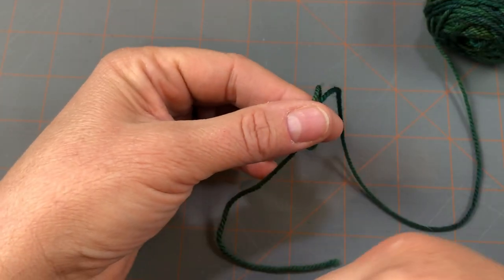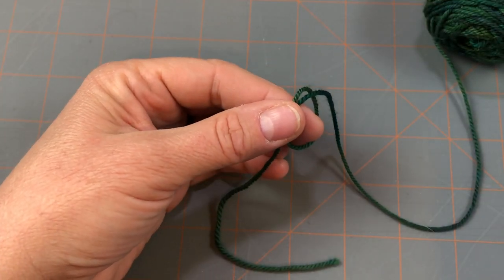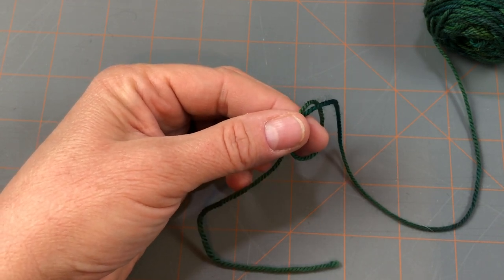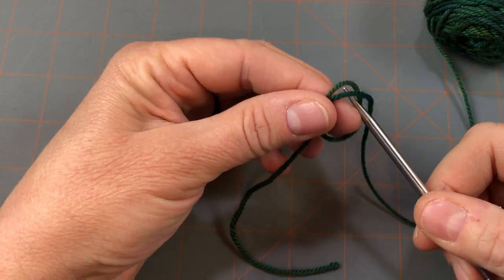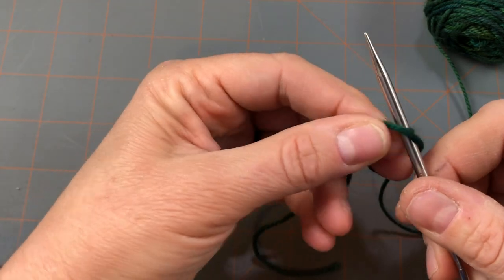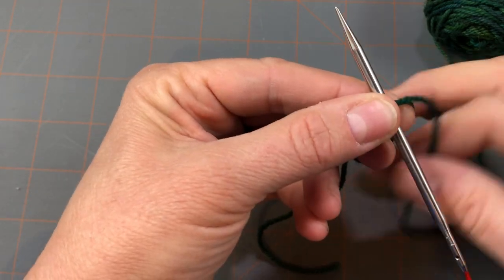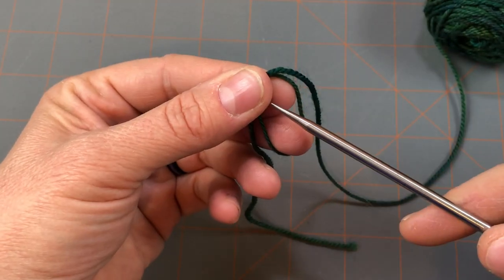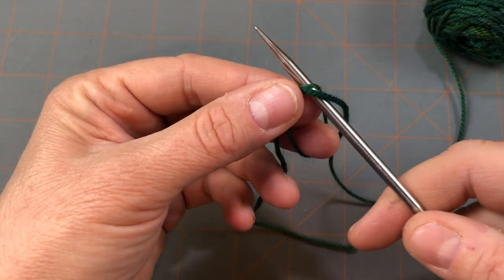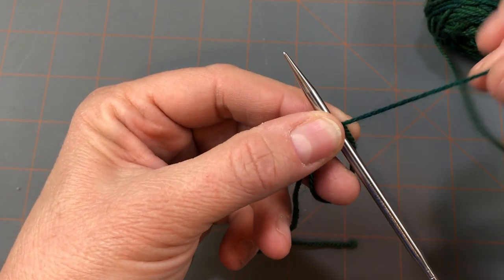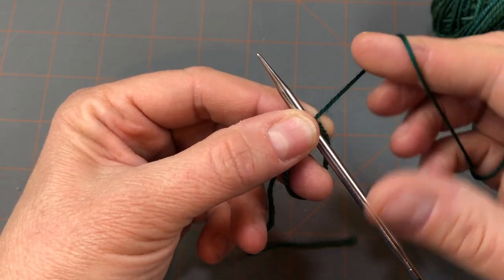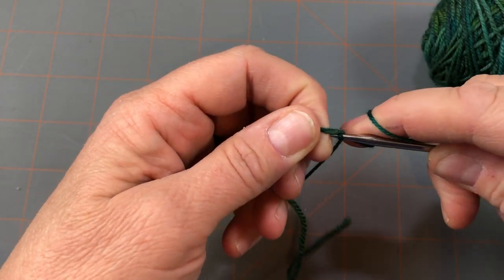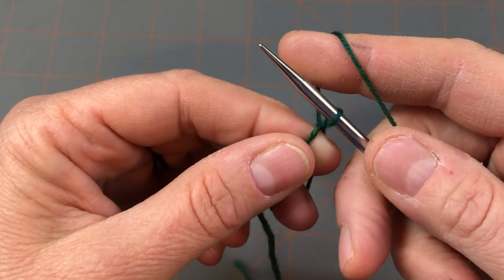So then I'm going to take a DPN of the size I'm using for my project or circular needles either one and I'm going to go ahead and put that through the loop and I'm going to hold this on my finger at the same time. I'm just pinching with my thumb and I have the loop going around my two fingers and I'm just putting this needle in. Then I'm going to take this just like I'm knitting and I'm going to wrap it and just do a knit stitch like normal into that loop and pull it through the loop and up.